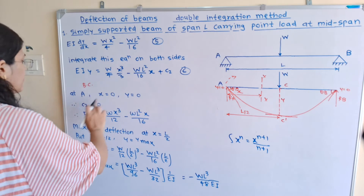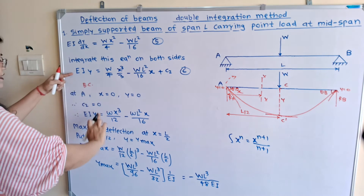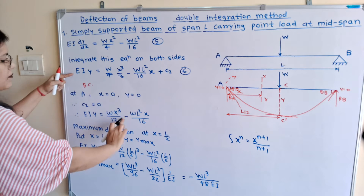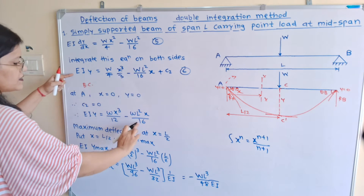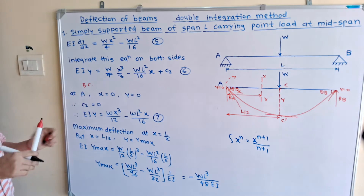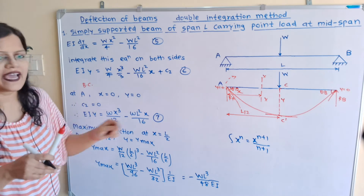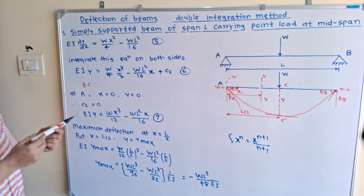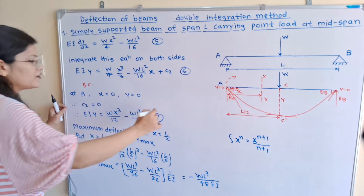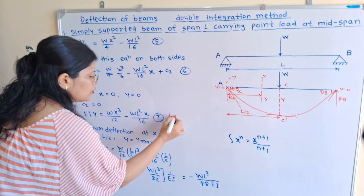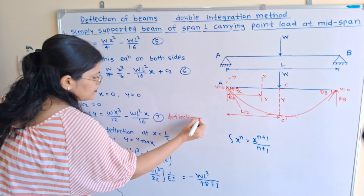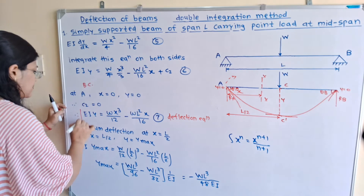With C2 = 0, the deflection equation (equation 7) is: EI·Y = Wx³/12 − WL²x/16. This is the deflection equation, and we can find deflection at any point on the beam using it.